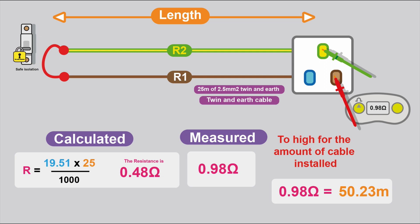Because if you've installed 25 metres of cable, that resistance reading has to be around about 0.48 of an ohm. If you're getting double that, you know there's something wrong. You need to do some further investigation and find out why.